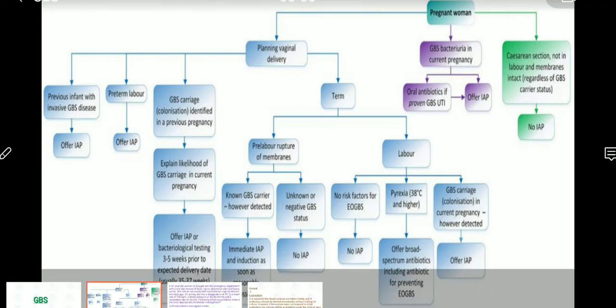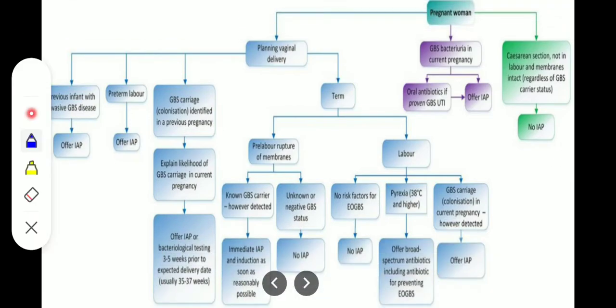You can see on the right-hand side that if a pregnant lady comes for cesarean section, she is not in labor, and membranes are intact. Regardless of the GBS carrier status, whether she has GBS or not, you don't have to give IAP. There is no need for intrapartum antibiotic prophylaxis.